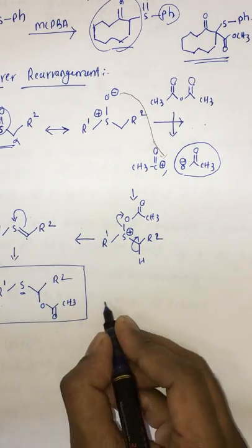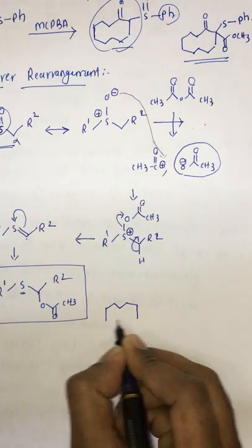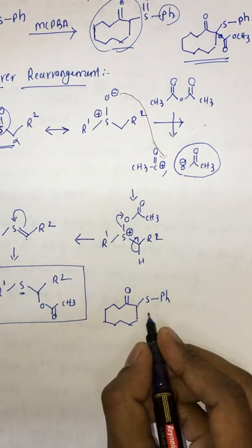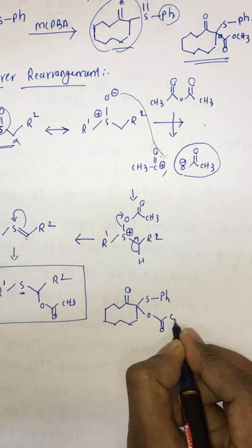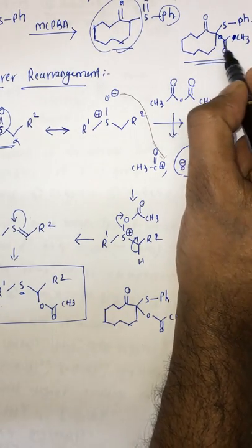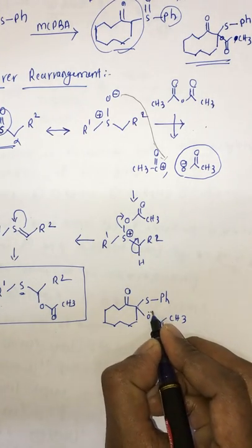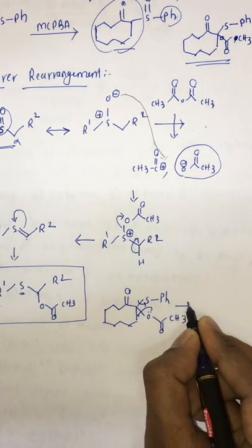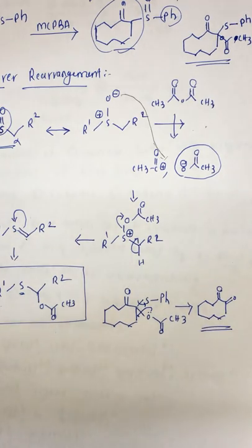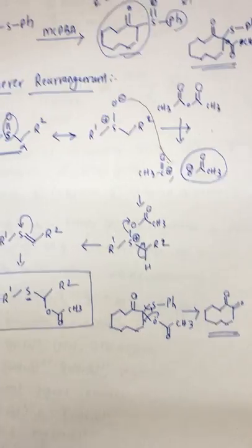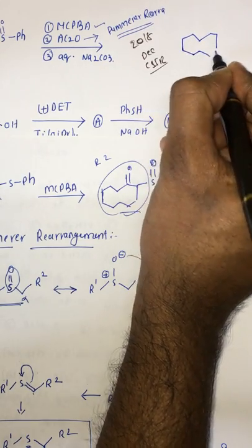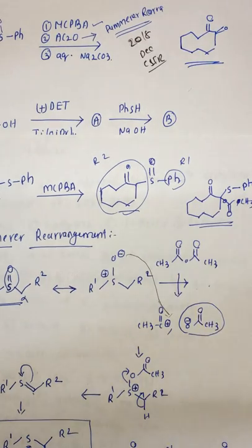In the Pummerer rearrangement, the product has an acetate at the alpha position. Now in the next step we have aqueous Na2CO3. The acetate group (OCOCH3) is hydrolyzed — this bond goes and this leaves — so we finally end up with the product after Na2CO3 treatment.